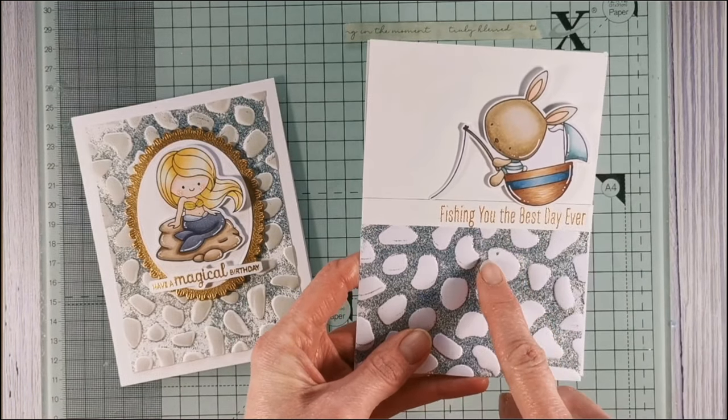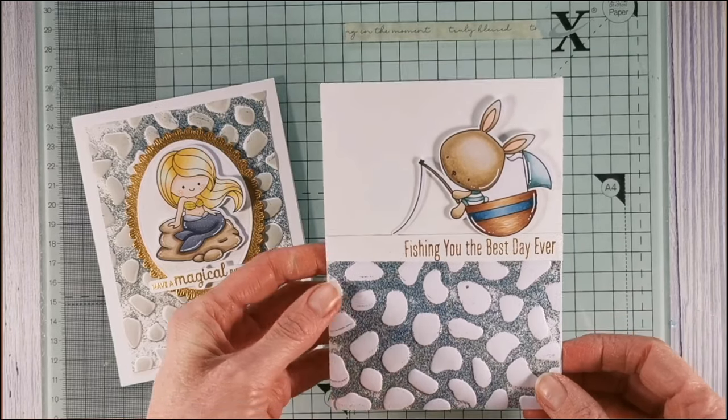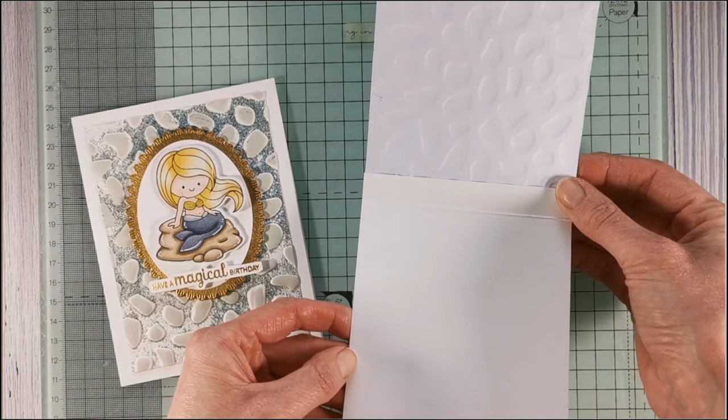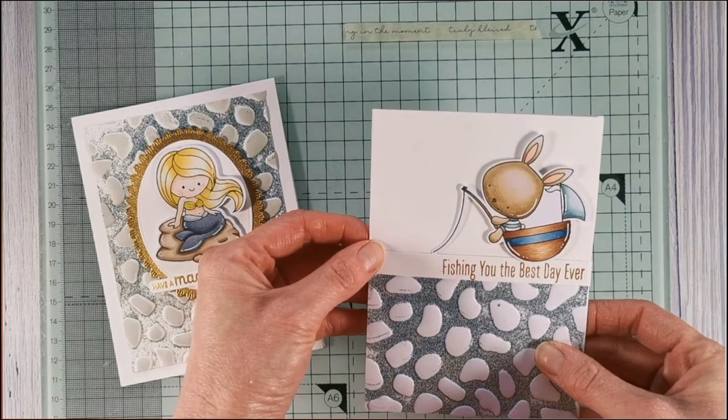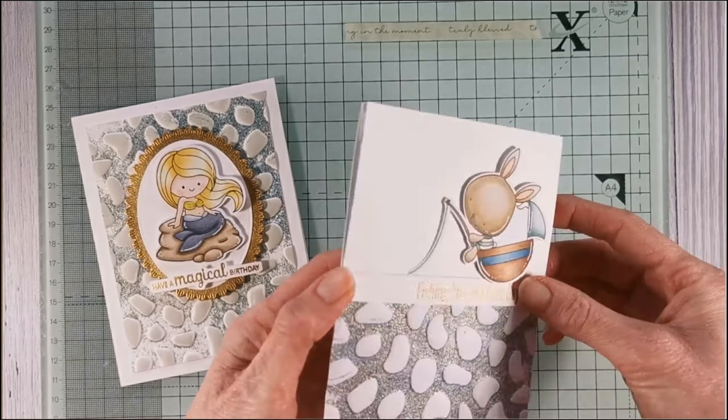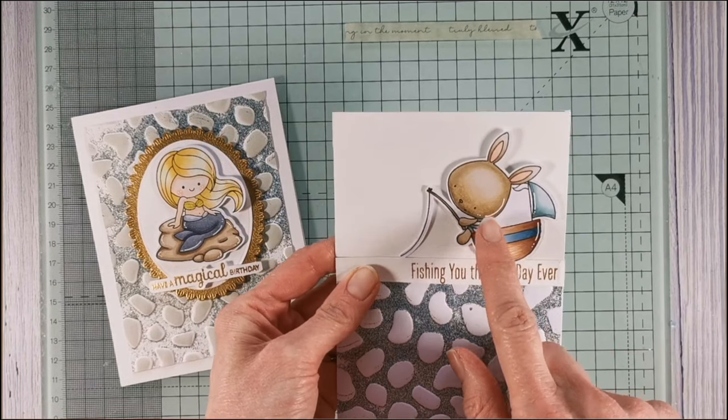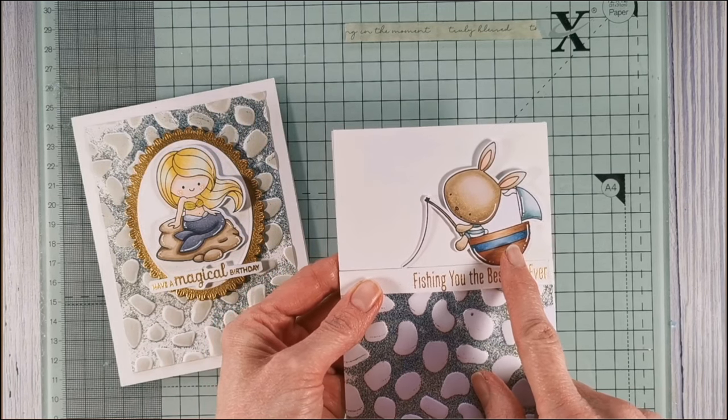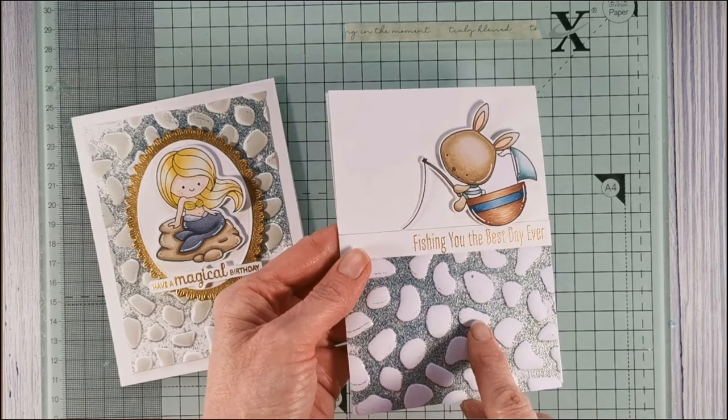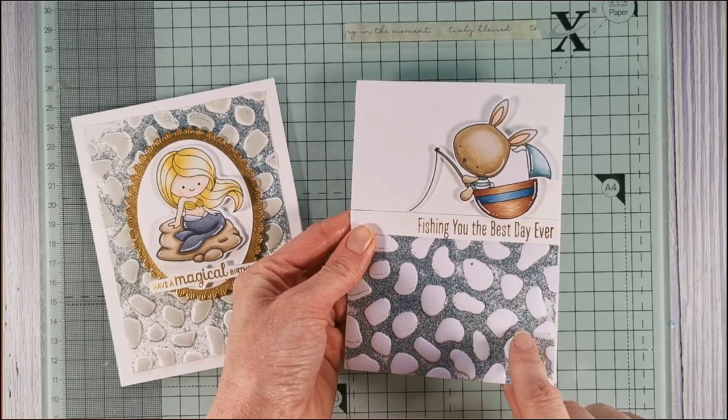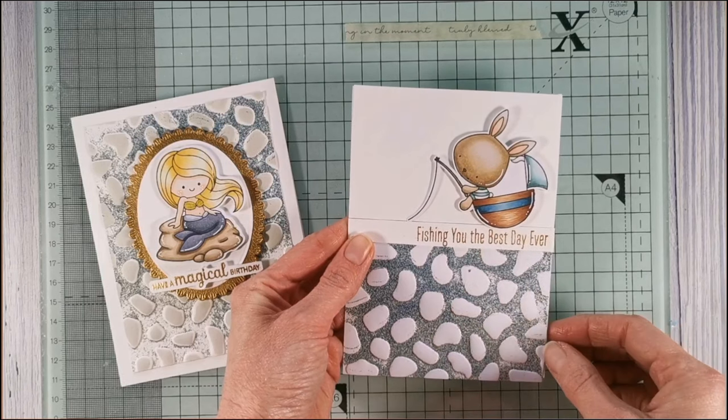And for my second card I've used a stamp set from MFT Stamps called You Keep Me Afloat. I've popped my panel onto a card base and then I've added some white cardstock across the top. Then I have added with foam tape my image which I have stamped, colored, and cut with my brother's scan and cut machine. Then I've just finished it off with a sentiment strip underneath.